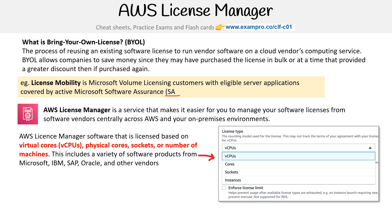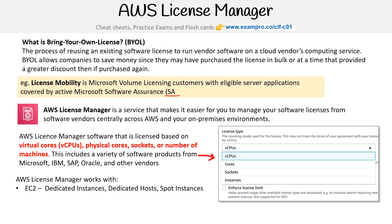The idea is you define what your license type is — for example, bound to a certain number of CPUs. License Manager works with EC2 with dedicated instances, dedicated hosts, and even spot instances. For RDS, it only applies to Oracle databases, so you can import that license for your Oracle server.